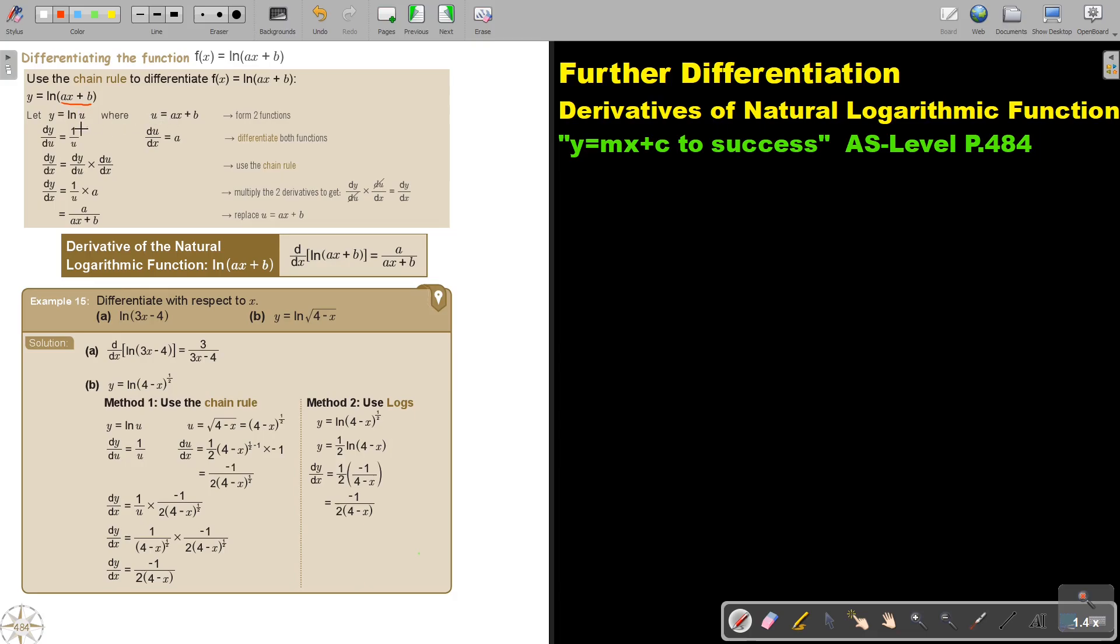Then we differentiate this, so dy/du and du/dx. So this is 1 over u and this is only a, that is a constant. If we multiply it, it is a over u and if we replace u, actually it's just becoming a. So what is a? a is the value in front of x. So that value in front of x, that is on top and then I just basically rewrite the bracket.